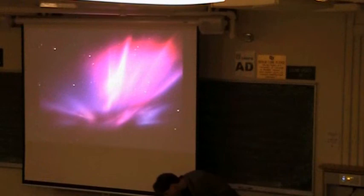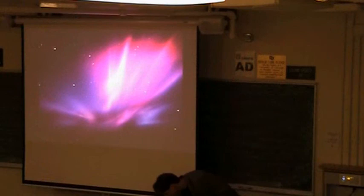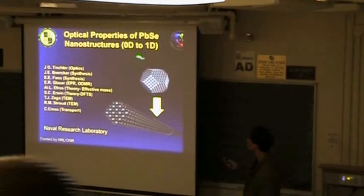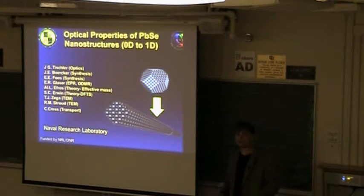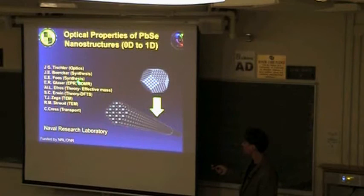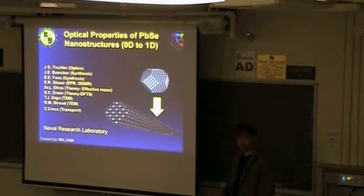Now I'll get to the talk. One of the projects we've been heavily invested in is the optical properties of lead selenide nanostructures — we'll discuss spherical nanocrystals and nanowires, which are very elongated structures in one dimension. This involves many people at NRL: I do optics, Janice Berger and Ed Fuss do synthesis, Efros and Erwin handle EPR and ODMR, and we use transmission electron microscopy to see the structures we're growing. We've also been doing some preliminary transport measurements.